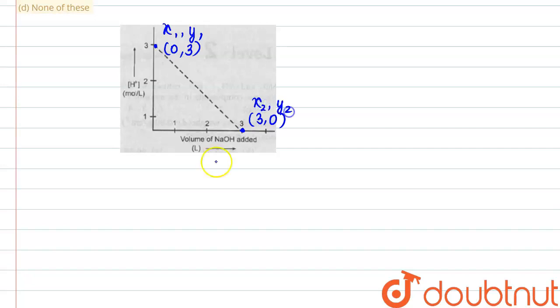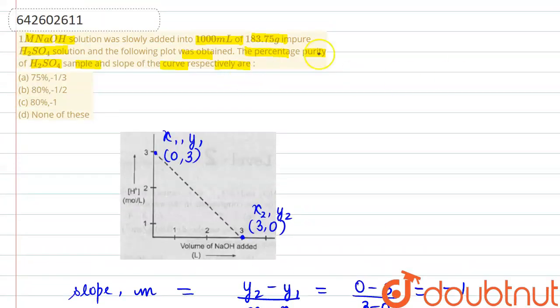Now we have to find the slope. For the slope determination, we will use a simple formula. Slope is represented by m: y2 minus y1 in the numerator divided by x2 minus x1 in the denominator. Substituting the values: 0 minus 3 divided by 3 minus 0 comes out to be minus 1. So slope we have got here.